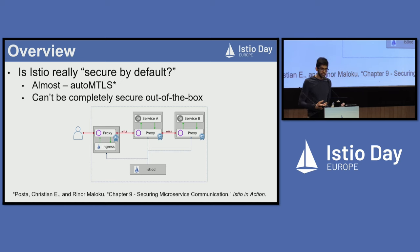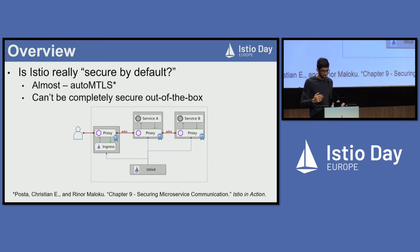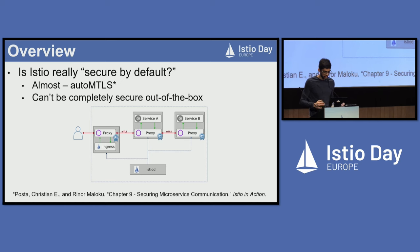Work is being done by the project maintainers and various stakeholders to make the default settings more secure, but there's a limit to how robust these baseline security settings can be. Just given the variation in architectures and networking topologies with Istio and Kubernetes, a one-size-fits-all approach to security is simply not feasible.